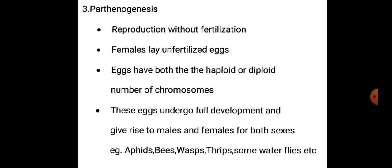Next type is parthenogenesis. Reproduction without fertilization is known as parthenogenesis. Females lay unfertilized eggs. Eggs may have either the haploid or diploid number of chromosomes. These eggs undergo full development and give rise to males, females, or both sexes. Examples: aphids, bees, wasps, thrips, some water flies, etc.